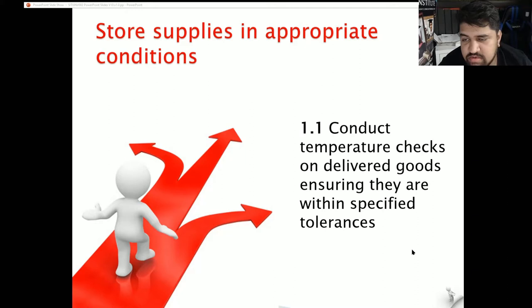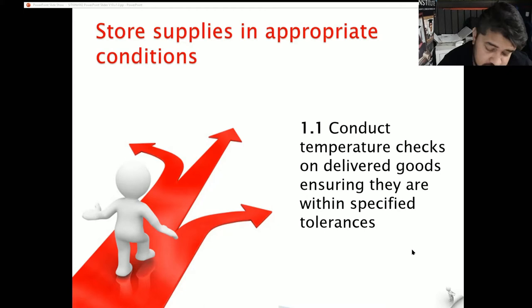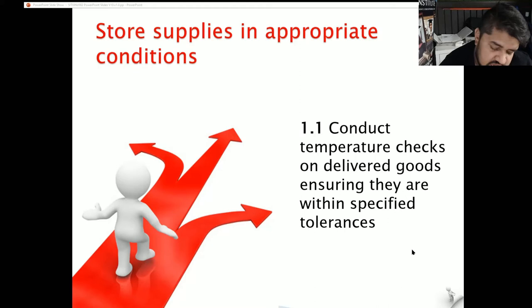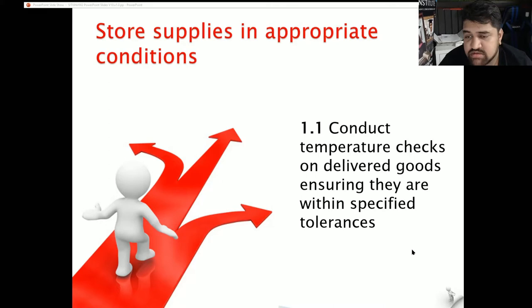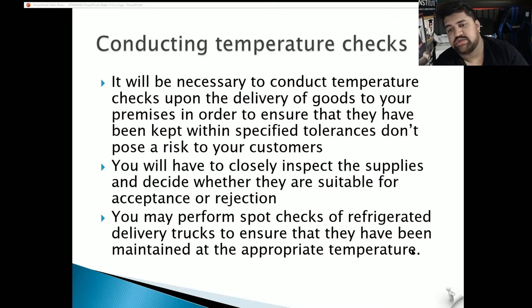Store supplies in appropriate conditions. 1.1: Conduct temperature checks on delivered goods ensuring they are within specified tolerances. For dry goods, make sure they're at room temperature — not too hot and not too humid. For frozen items, you want them below negative 10 degrees, and if they're in the freezer, below negative 18. For fridge items — raw foods or cooked foods that need to be cool — you want them below 5 degrees Celsius.